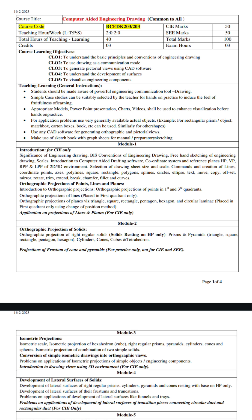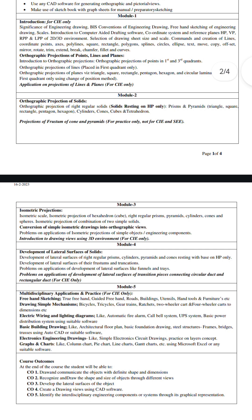Module 2 is projection of solids. In this, you will be studying about all types of solids like prisms, pyramids — triangle, square, rectangle, pentagon — and cylinders. Module 3 is all about isometric projection.